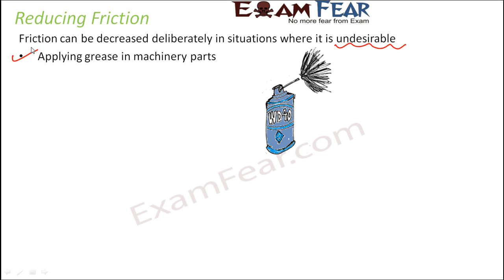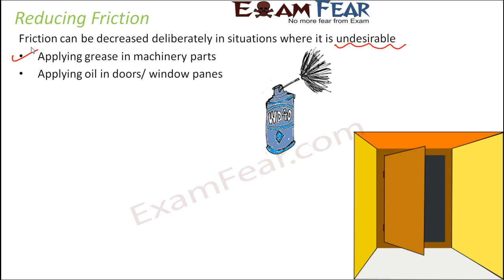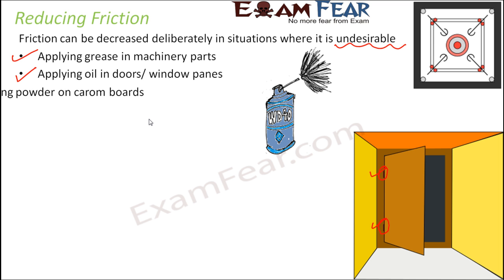You would have seen this application at home. Sometimes doors or window panes start making a lot of noise. Why? Because of friction — when you close or open the door, the surfaces are moving over one another, especially at the joints. If you apply grease or oil — some oily substance — to make the surface smooth in these areas, you will see that the sound disappears. That is because friction has been reduced by the application of oil or grease.